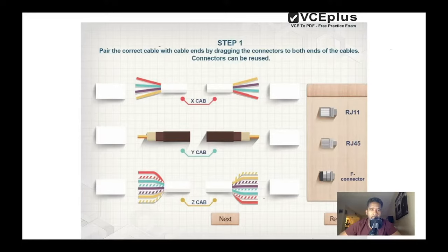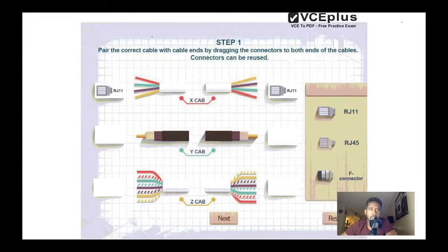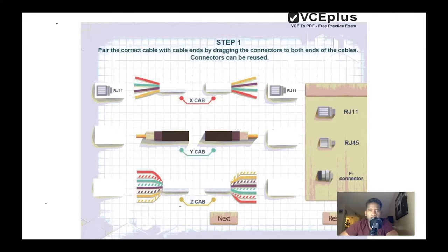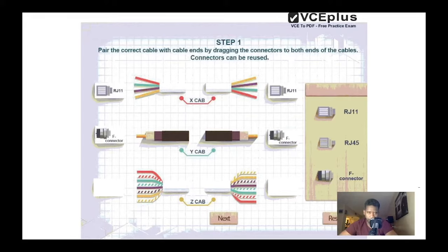The X cable would use the RJ-11 connector. In the exam it will look different — you will have the option to drag and place the connector exactly where it should be. The Y cable looks like an antenna or TV cable, so the type of connector to use on it is the F-connector.